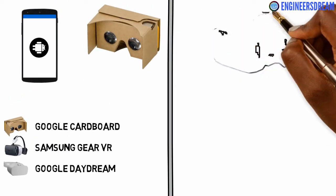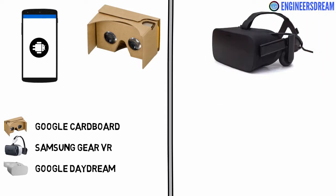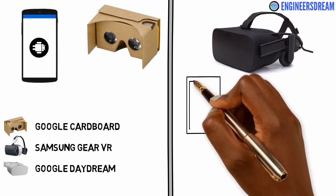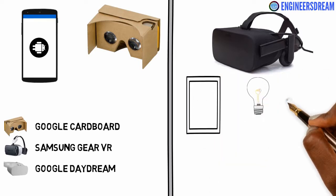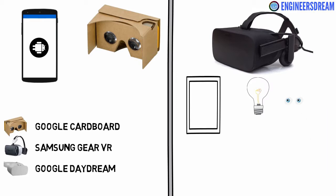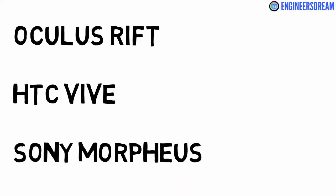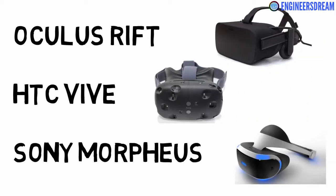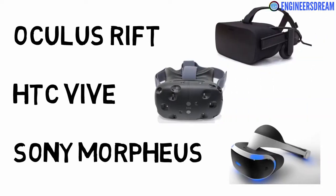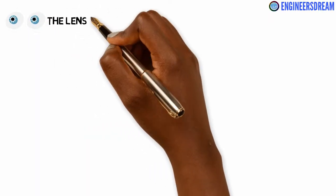In the second type of VR headset, the user does not need a smartphone, as all the necessary components are built in inside the VR headset. These VR headsets consist of a screen, some sensors, and lenses which help in tracking the user's head position. Examples include the Oculus Rift, HTC Vive, and the Sony PlayStation VR, also called the Sony Morpheus.